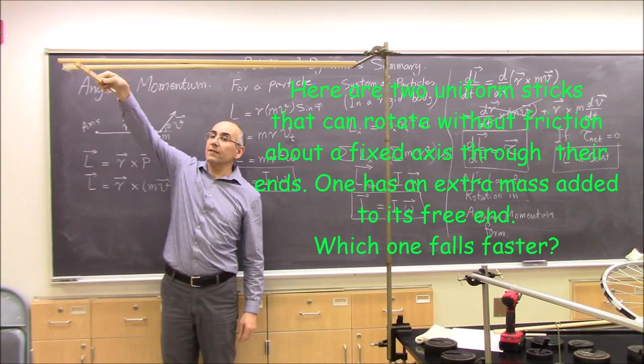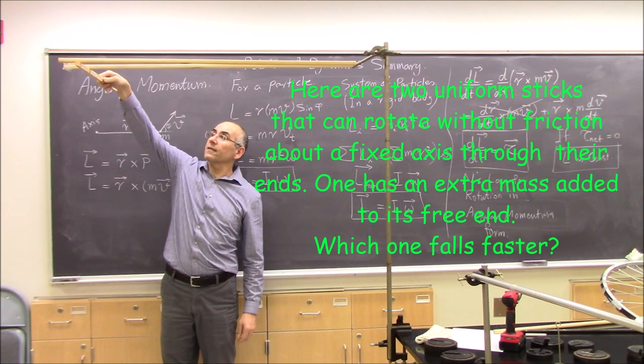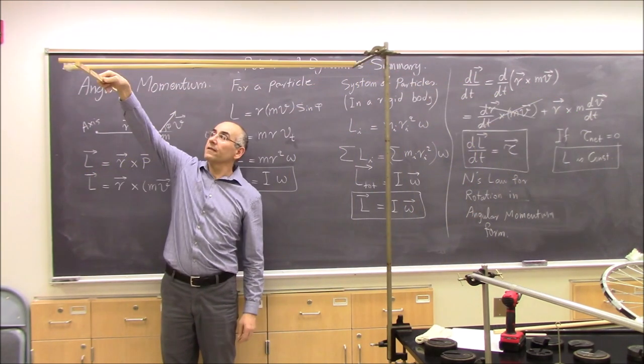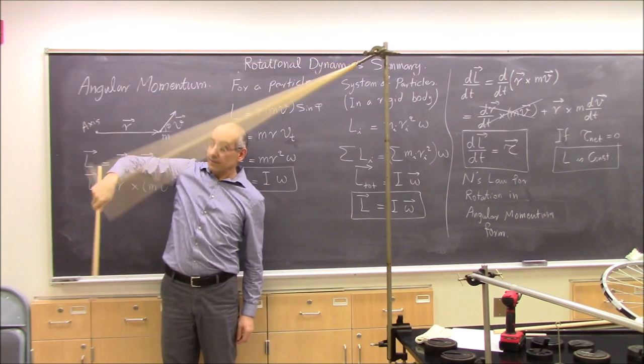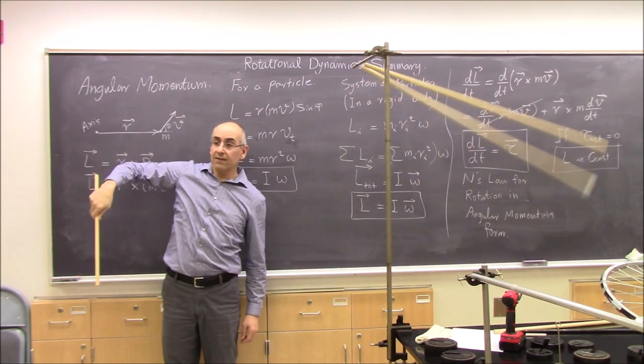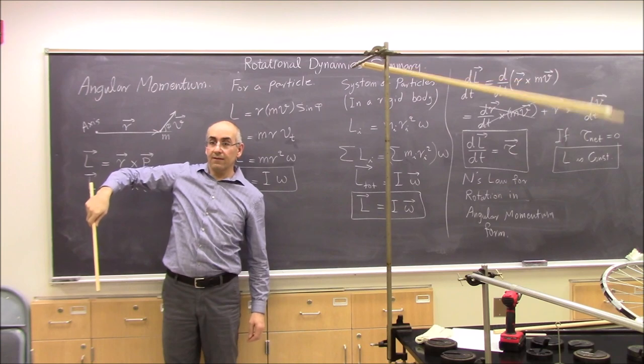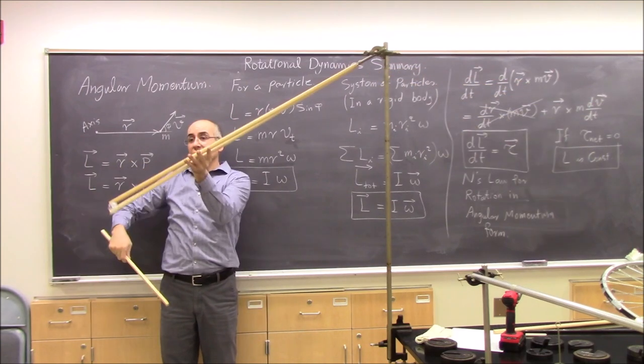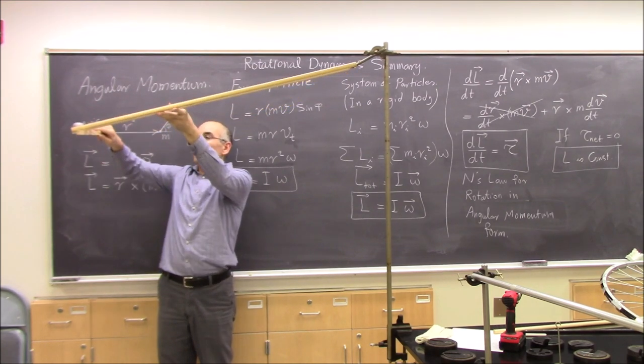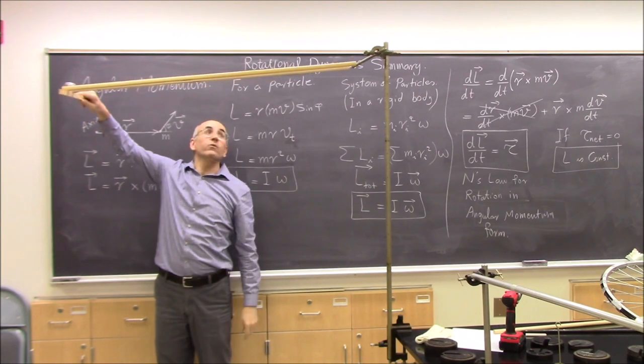Here are two uniform sticks that can rotate without friction about a fixed axis through their ends. One has an extra mass added to its free end. Which one will fall faster? You see that? The one that has mass goes slower. And why is that?